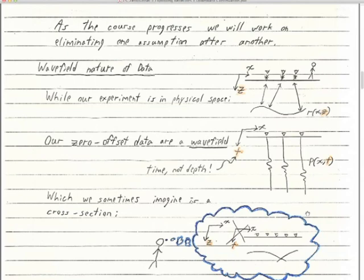Even in this half of the course, we're going to be able to partially eliminate that lateral velocity homogeneity assumption. We'll be able to deal a little bit with slowly, laterally varying velocity at the end of the class.